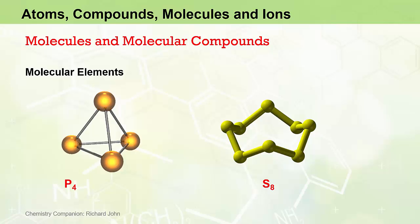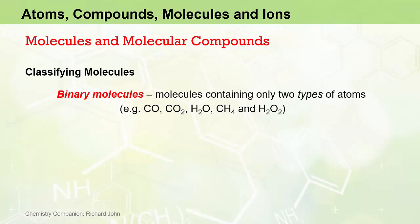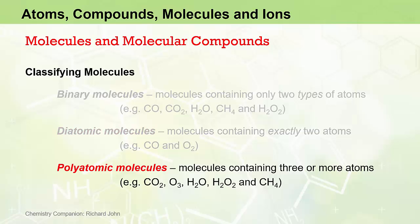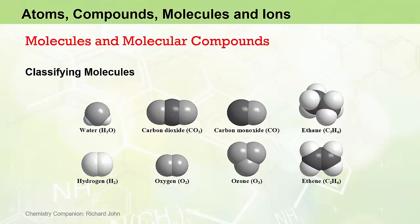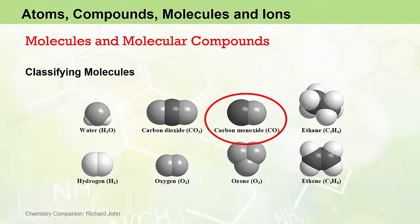A final way of describing molecules is to classify them as either binary molecules, diatomic molecules, or polyatomic molecules. Binary molecules are molecules containing only two types of atoms. Diatomic molecules contain exactly two atoms, and polyatomic molecules contain three or more atoms. Looking at some common molecules, we can see that four of them would be examples of binary polyatomic compounds — binary meaning two types of atoms, and polyatomic meaning three or more atoms in total. Carbon monoxide would be an example of a binary diatomic molecule, containing two types of atoms and exactly two atoms.